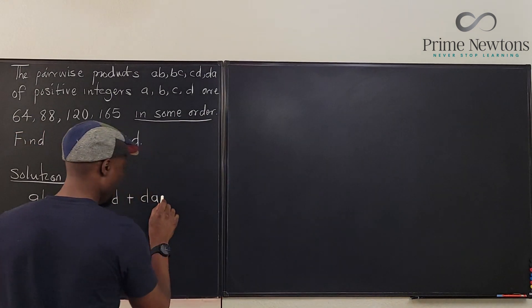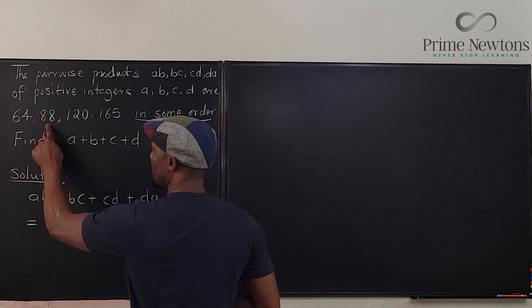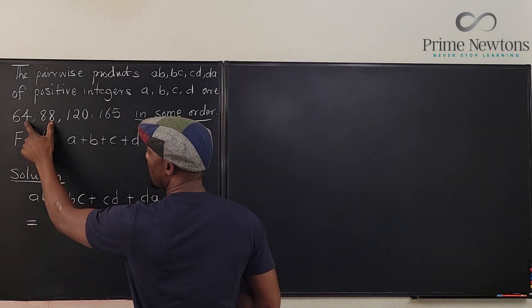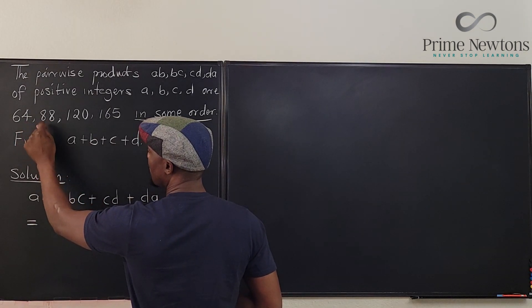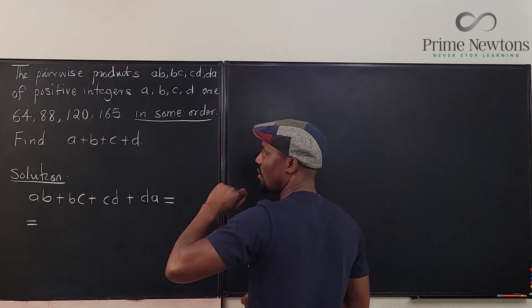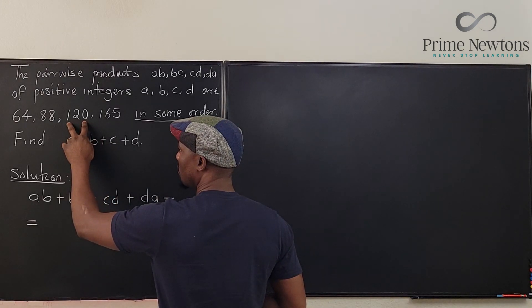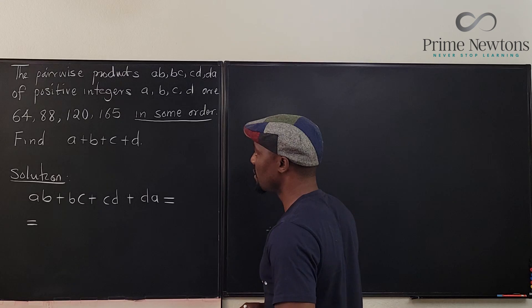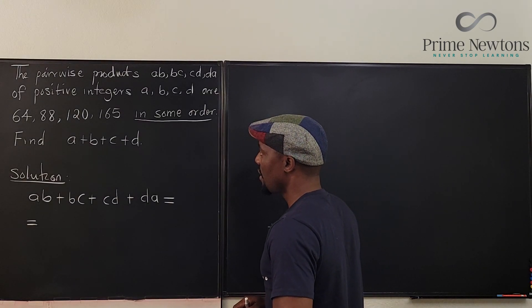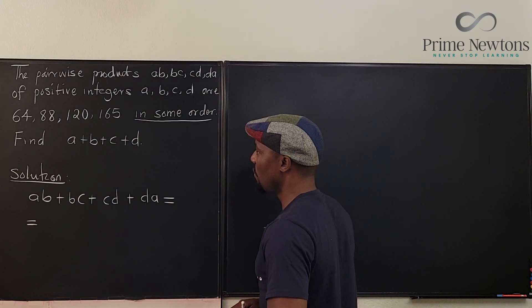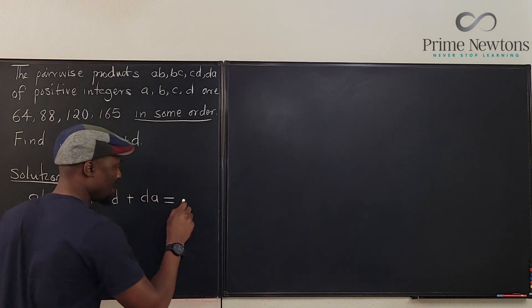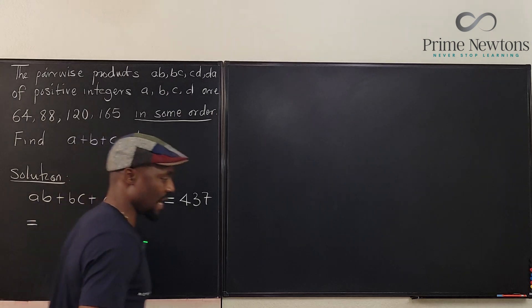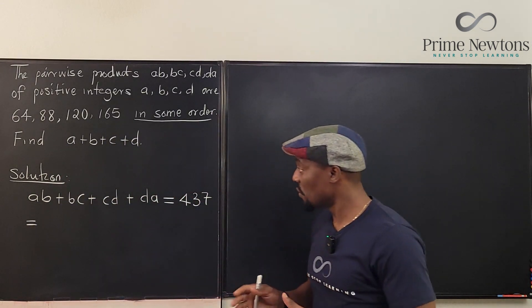If we add this to this, let's do the easiest addition. This is going to be 12, this is going to be 14, so that's 152. 152 plus 120 is going to be 272. 272 plus 165, that's going to be 437. So if we add everything up, we're going to get 437.